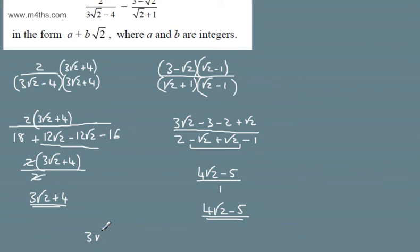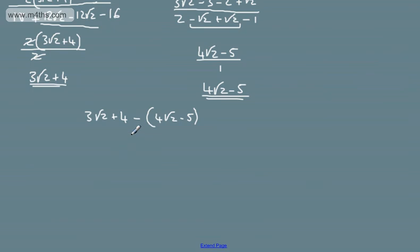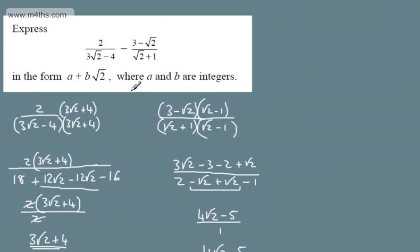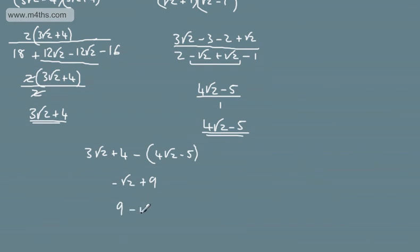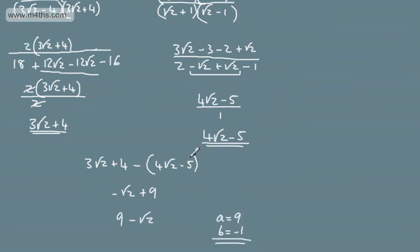All we need to do now is compute 3 root 2 plus 4 minus the quantity 4 root 2 minus 5. That gives minus root 2 plus 9. So 3 root 2 minus 4 root 2 is minus root 2, and 4 minus negative 5 gives plus 9. We need this in the form A plus B root 2, so we write 9 minus root 2. The value of A is 9 and the value of B is minus 1.